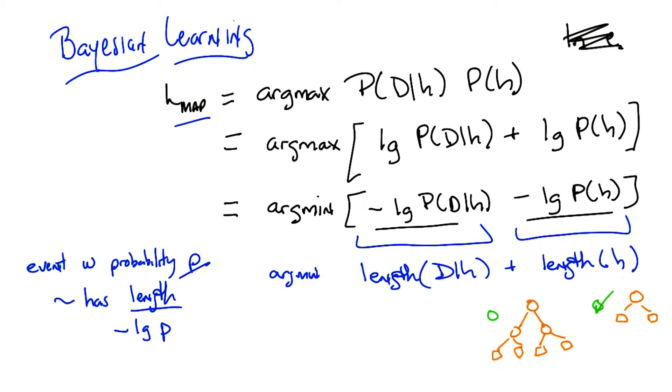So smaller decision trees, trees with fewer nodes, less depth, whatever you need to make it smaller, have smaller length than bigger decision trees. So if all we cared about was the second term here, we would prefer smaller decision trees over bigger decision trees, which we do.